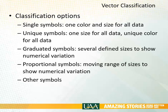There are lots of different forms of symbolization. A single symbol is one color and one size for all the data. A unique symbol would be one particular size for all the data, but unique colors for each of the different symbolized data — imagine a map of the world showing different countries. A graduated symbol is one in which the size of the symbol changes to show numerical variation, and a proportional symbol is one where you have a moving range of sizes to show that same numerical variation.